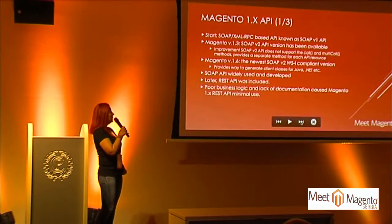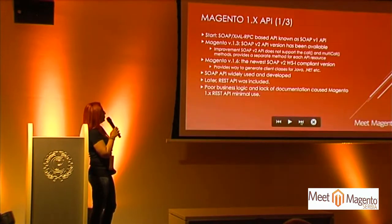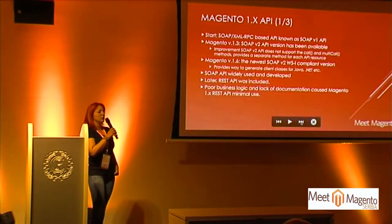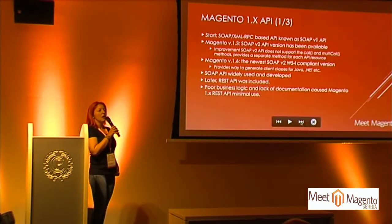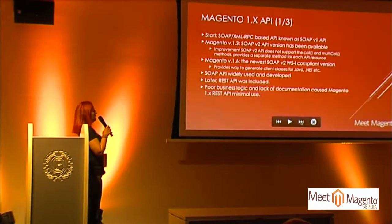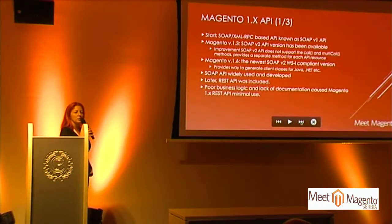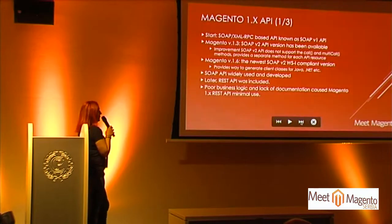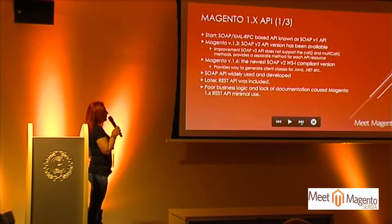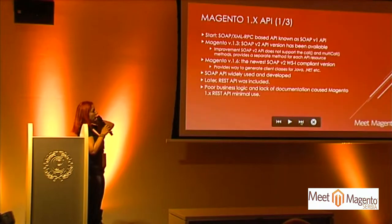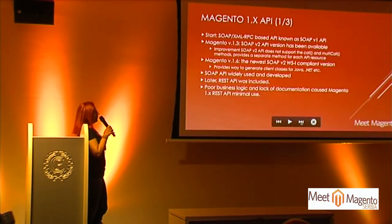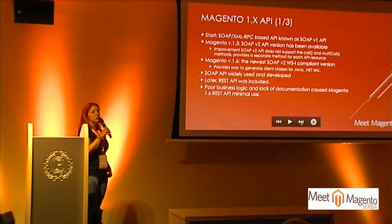With Magento 1.3, SOAP version 2 was already released. The main thing there is that the call and multi-call methods are replaced with different separate methods for each API resource. We had one WSDL file, and then in Magento 1.6, the SOAP WSI-compliant version came out, which actually enables generating client classes using standard libraries for all other programming languages — Java, .NET, whatever you want to use.